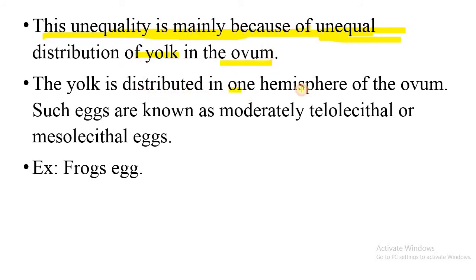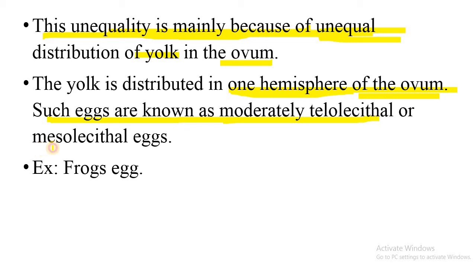The yolk is distributed more in one hemisphere of the ovum, and such eggs are known as moderately telolecithal or mesolecithal eggs. An example is the frog egg. Radial holoblastic cleavage occurs in the case of amphibians.